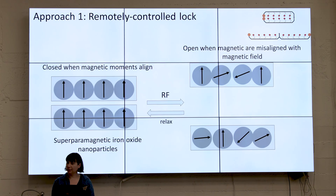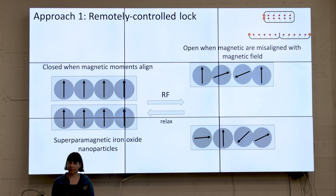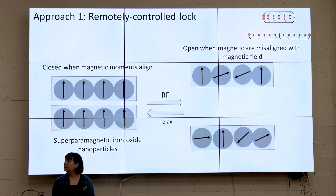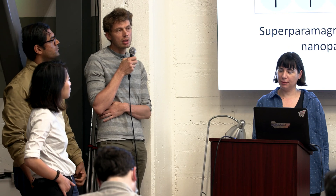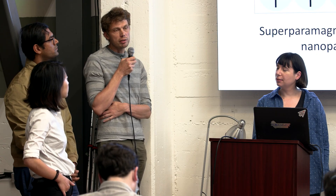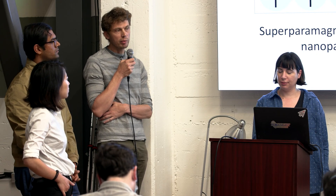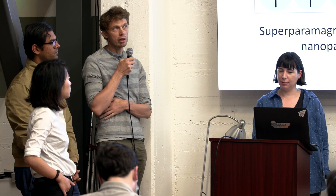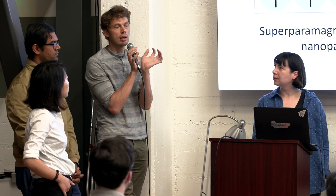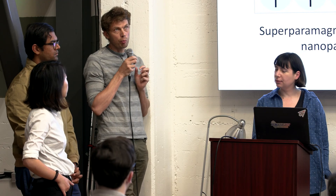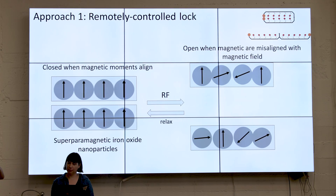Our remotely activated lock is made from superparamagnetic nanoparticles — typically iron oxide, around 10 to 40 nanometer magnetic core. In a magnetic field, they align their magnetic moments and you can generate nanonewton forces. We're going to align an array of particles on two sides of the box so it can open. The way we open it is by disrupting it with radio frequency that switches magnetic moments, misaligns them, and removes this attractive force. This is how our remote opening works.